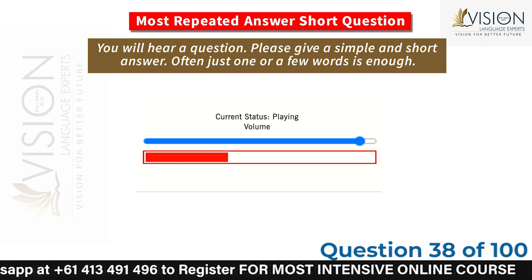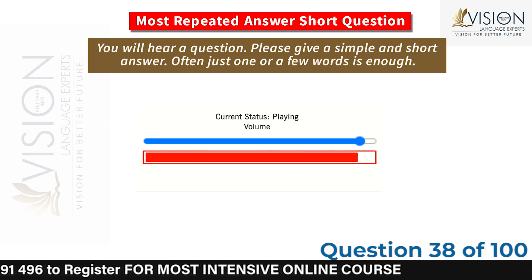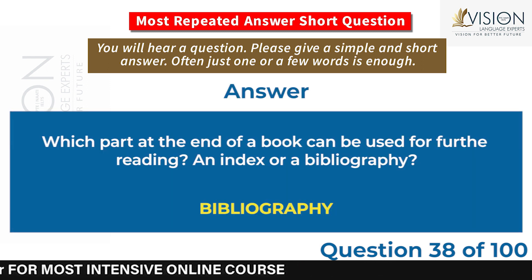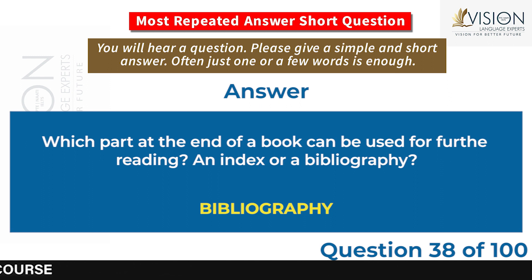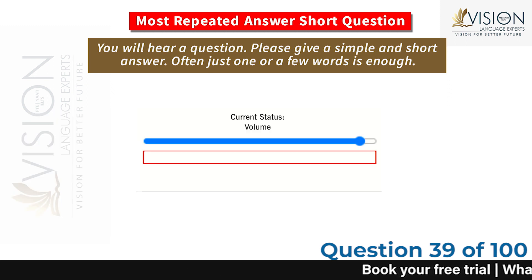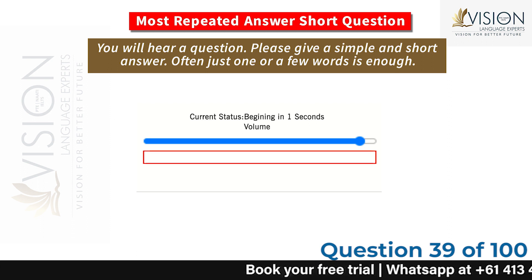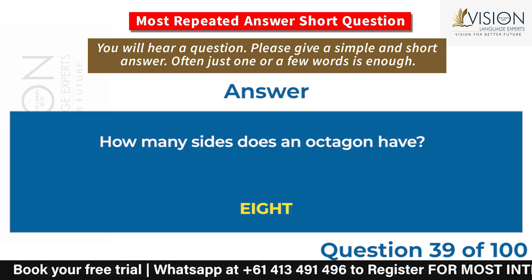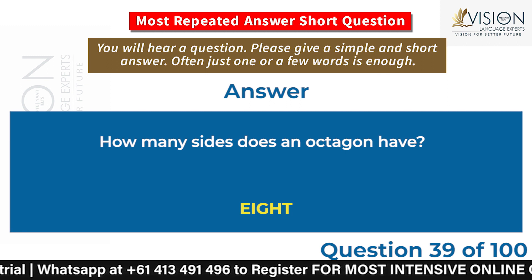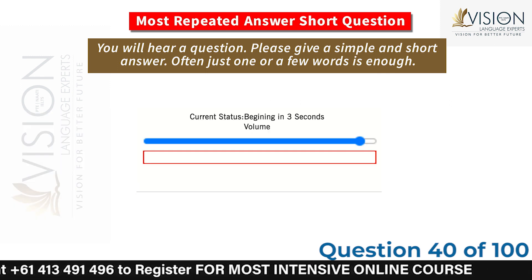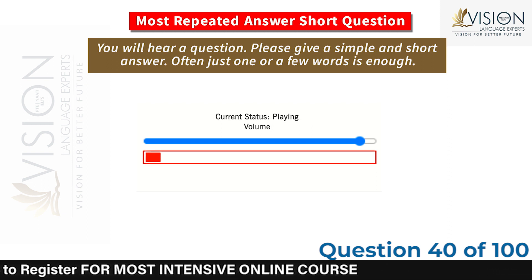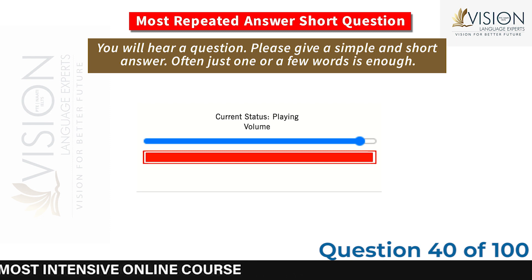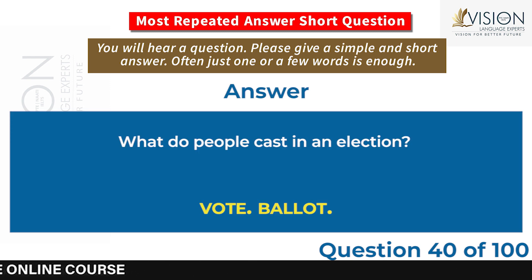Which part at the end of a book can be used for further reading — an index or a bibliography? Bibliography. How many sides does an octagon have? 8. What do people cast in an election? Vote / ballot.